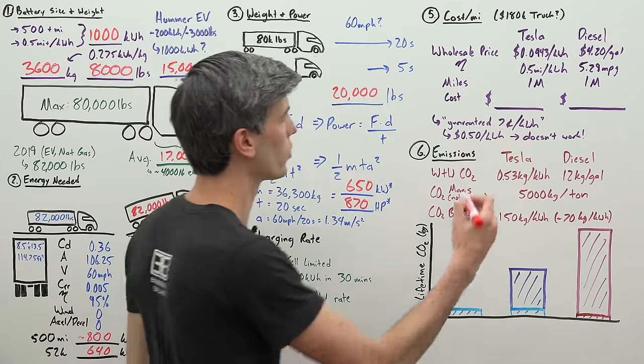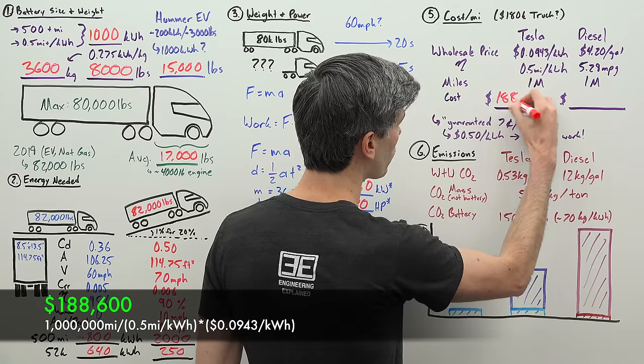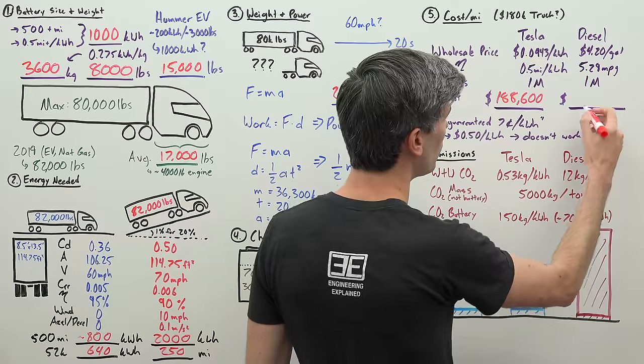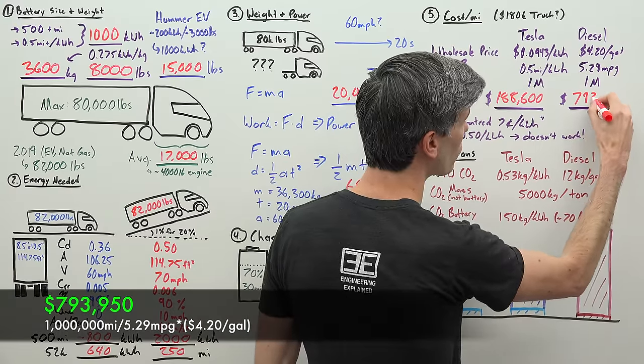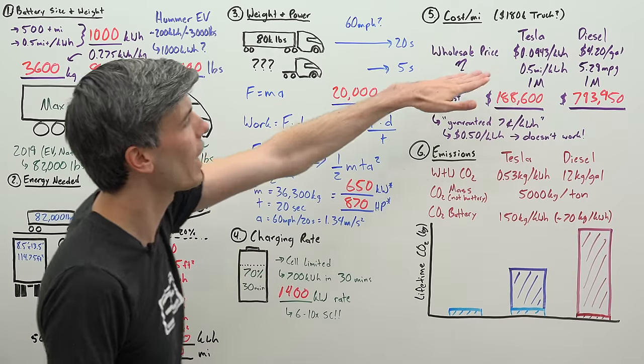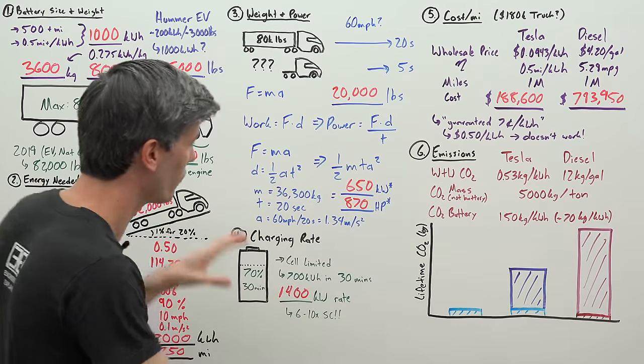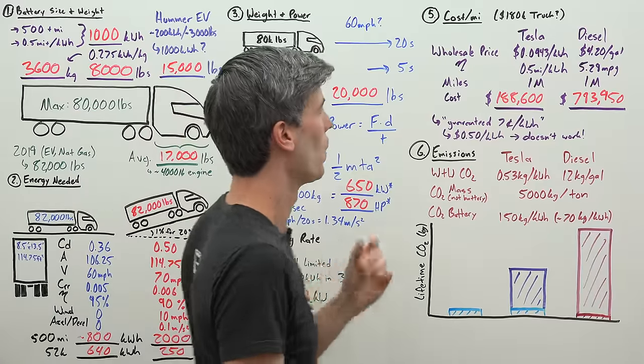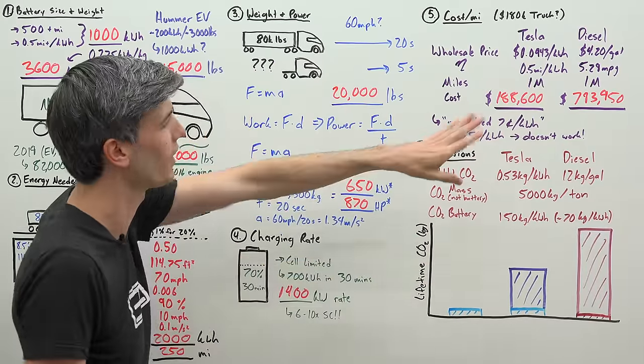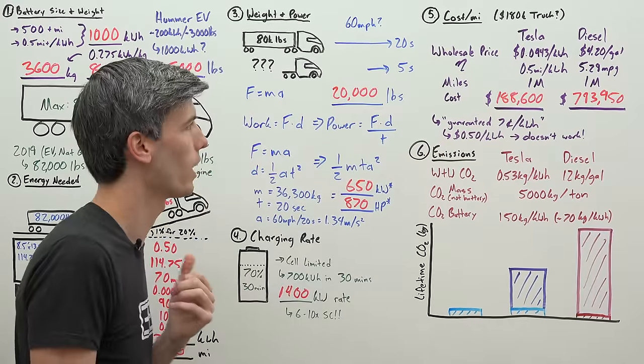What is the price in each of these scenarios? For the Tesla you get $188,600 that you will spend purely on electricity. For the diesel you're at $793,950. If these are the actual prices you're paying for one or the other, it's abundantly clear that you should go electric if you have the capability to do it and the charging infrastructure. If you can actually get electricity for this price and make it work out, it's insane to go diesel.